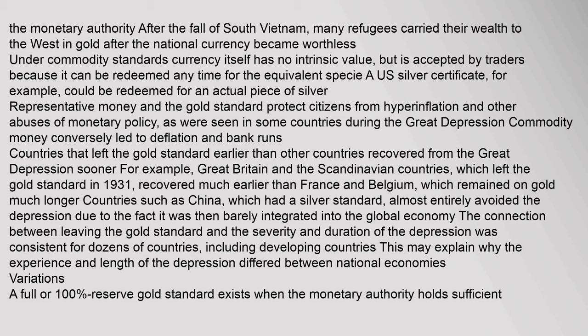Under commodity standards, currency itself has no intrinsic value, but is accepted by traders because it can be redeemed for the equivalent specie. Representative money and the gold standard protect citizens from hyperinflation and other abuses of monetary policy, as were seen in some countries during the Great Depression. Commodity money conversely led to deflation and bank runs. Countries that left the gold standard earlier than others recovered from the Great Depression sooner — Great Britain and the Scandinavian countries, which left in 1931, recovered much earlier than France and Belgium. Countries such as China, which had a silver standard, almost entirely avoided the depression due to being barely integrated into the global economy. The connection between leaving the gold standard and the severity and duration of the depression was consistent for dozens of countries.